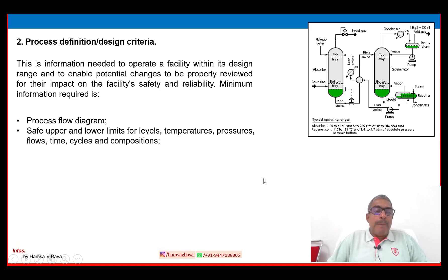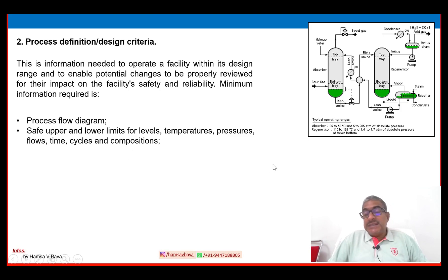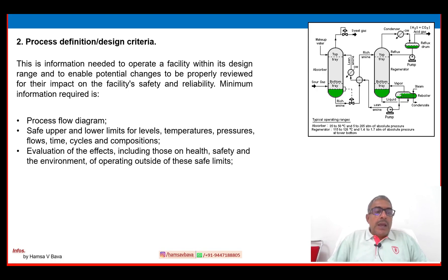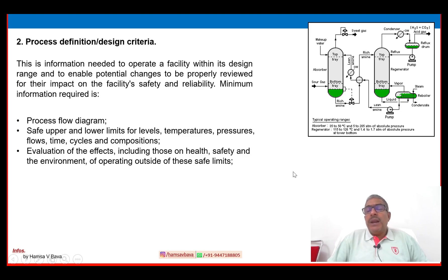The safe upper and lower limits of level, temperature, pressure, flow, time, cycle and composition are also required. Some PFDs may provide that information, and others may not — but the P&ID drawing can provide these details, covering process variables such as level, temperature, pressure and flow, as well as safeguarding and operating parameter details. This also includes evaluation of the effect — including health, safety and environment — of operating outside these safe limits.